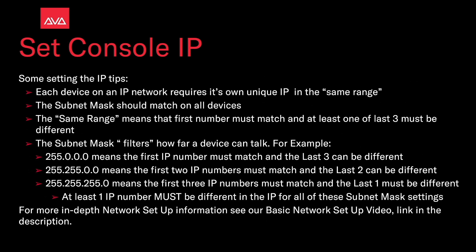The subnet mask filters how far each device can talk. For example, 255.0.0.0 means the first IP number must match but the last three can be different. 255.255.0.0 means the first two IP numbers must match and the last two can be different. 255.255.255.0 means the first three must match and the last one must be different. At least one IP number must be different for all subnet mask settings.